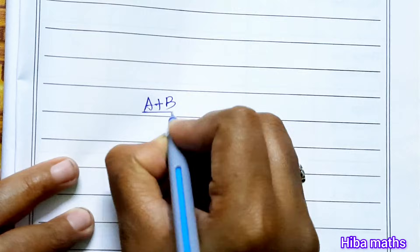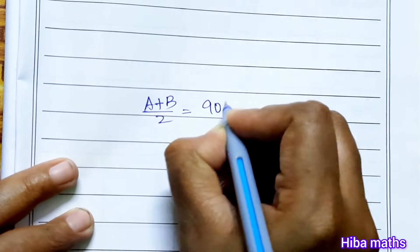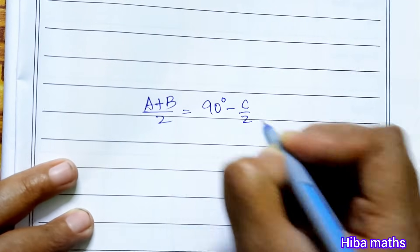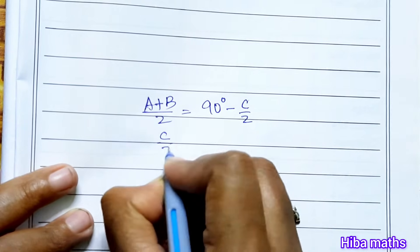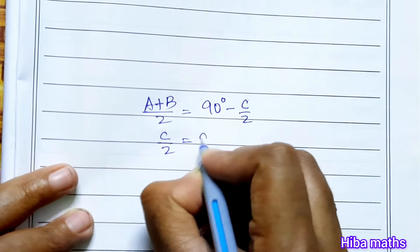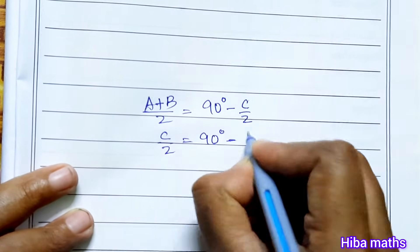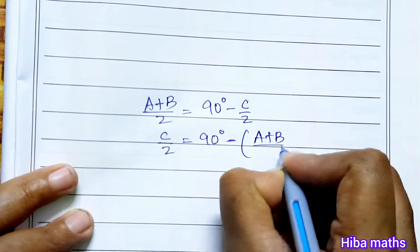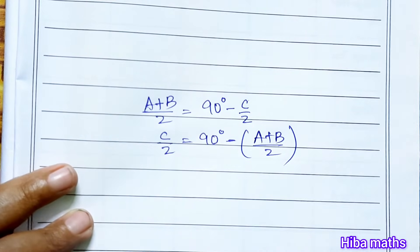So (a+b)/2 equals 90° minus c/2. Therefore, sin((a+b)/2) = sin(90° minus c/2) = cos(c/2). We will use this substitution. So we can now replace the sine term with cos(c/2).